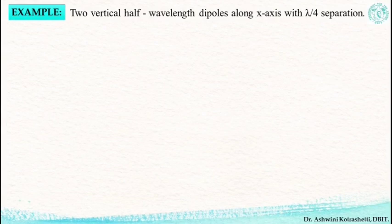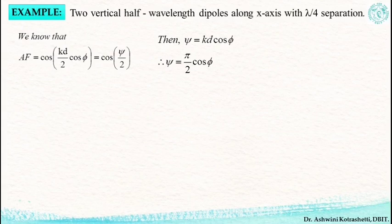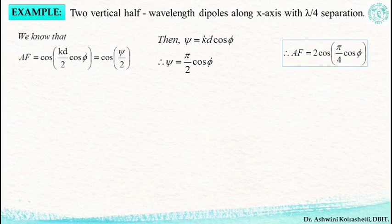Let's take another example. Here we have two vertical half-wavelength dipoles along the z-axis with a distance of separation of lambda by 4. The array factor will be cos(psi/2) since it is fed with equal phase and amplitude. I will find psi, which gives pi/2 cos(theta). Subsequently the array factor is cos(pi/4 cos(theta)). We can normalize it by dividing by 2, so the normalized array factor will be cos(pi/4 cos(theta)).